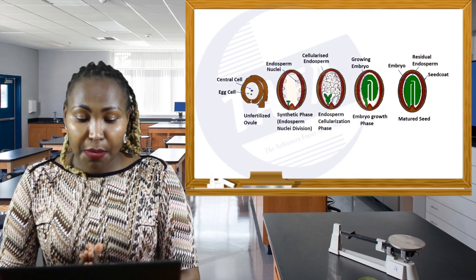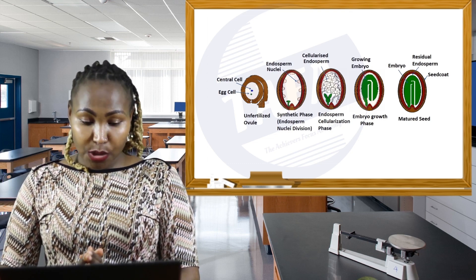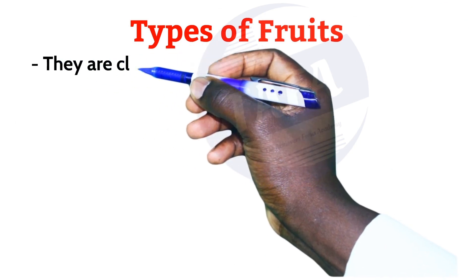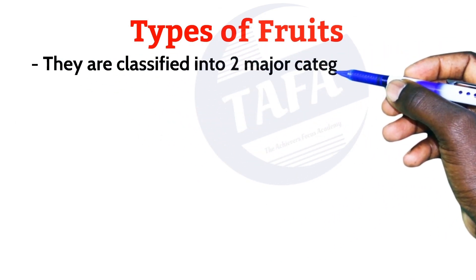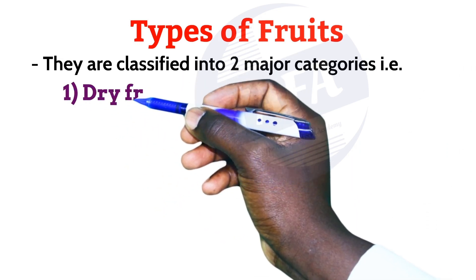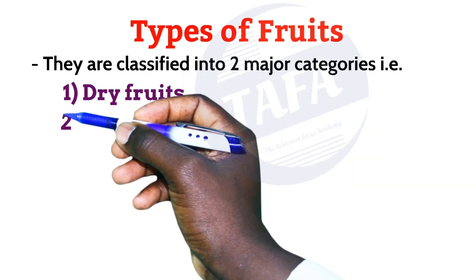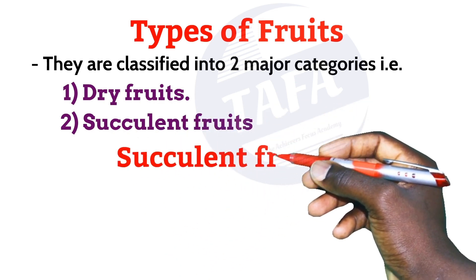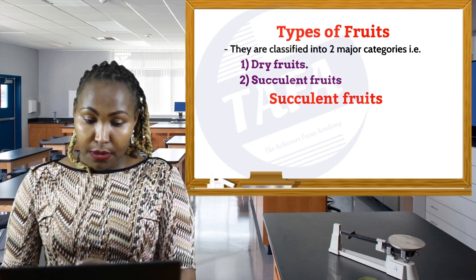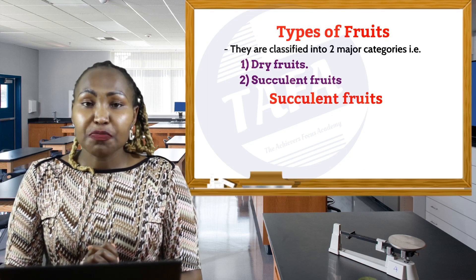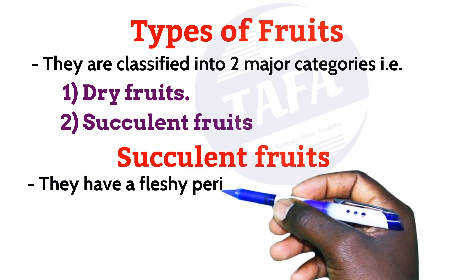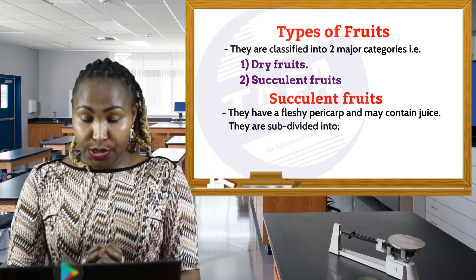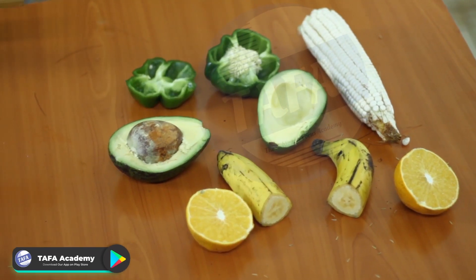We will now examine the different types of fruits. Fruits have been classified into two types: dry fruits and succulent fruits. We are going to start our discussion with succulent fruits. When we say succulent, it means that they have a fleshy pericarp and that they contain juice.